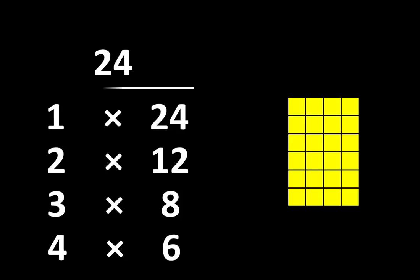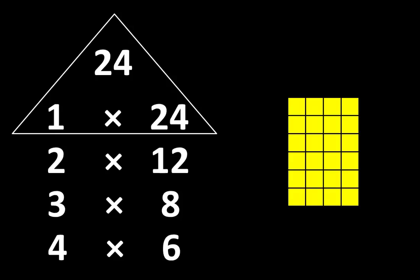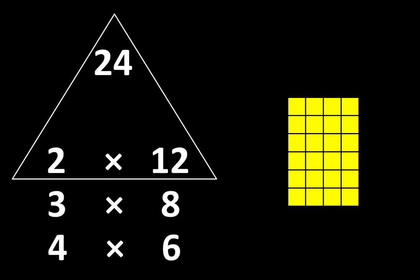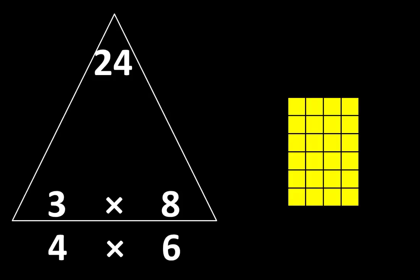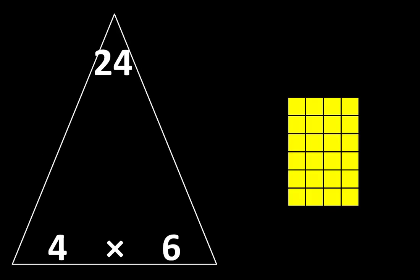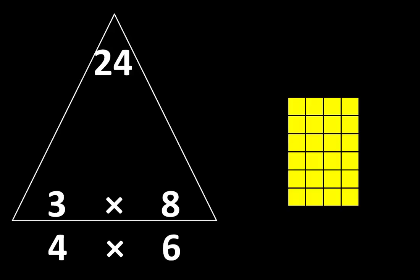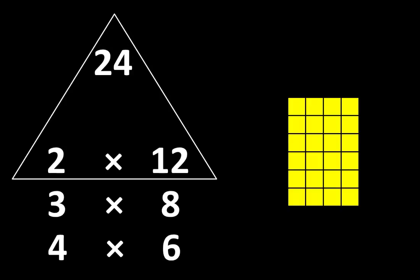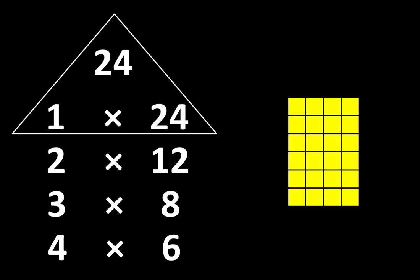So we can think of 24 as 1 group of 24 or 24 groups of 1, as 2 groups of 12 or 12 groups of 2, as 3 groups of 8 or 8 groups of 3, and as 4 groups of 6 or 6 groups of 4. The product is 24 when we multiply 4 times 6, 3 times 8, 2 times 12, or 1 times 24.